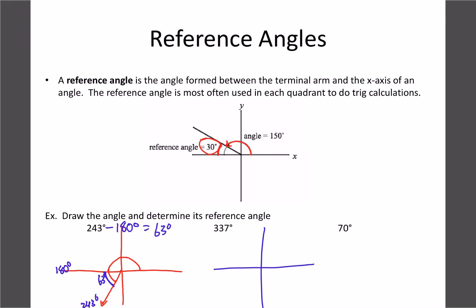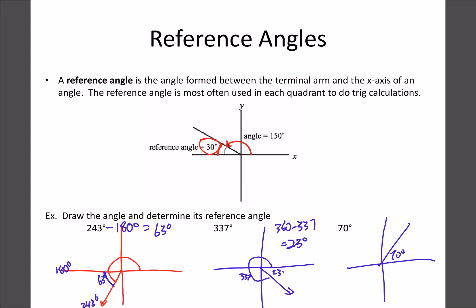For 337 degrees, that's somewhere near 360, so we go 360 minus 337, giving us a reference angle of 23 degrees. And for 70 degrees, the reference angle is always between the x-axis, so 70 is already the reference angle — no calculation needed. Quite often in quadrant one, your angles will already be the reference angle.